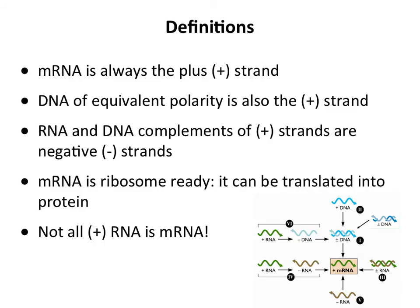So a DNA strand that has the equivalent polarity as mRNA is the plus strand. And the complements of plus strands are negative strands or minus strands. We use the words interchangeably: plus, positive, minus, negative — it's just a way to identify what strand we're talking about. And mRNA — the plus strand — is ribosome-ready: it can be translated into protein. That's the definition of mRNA.